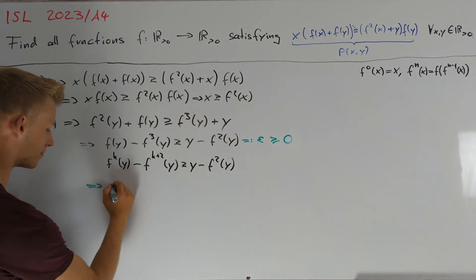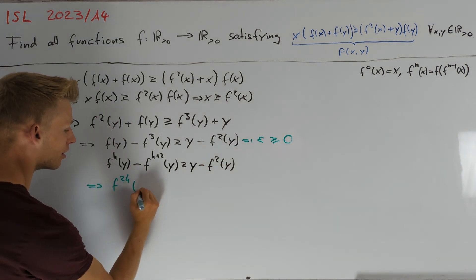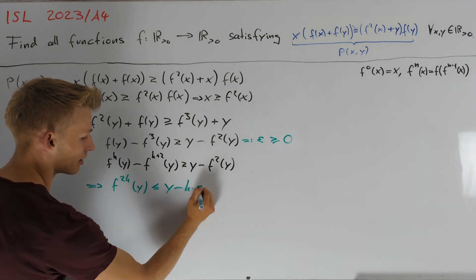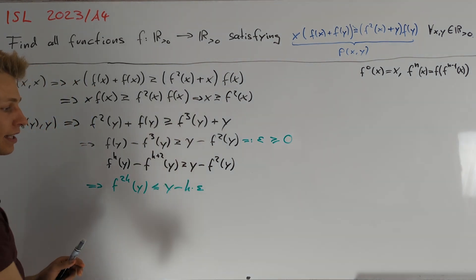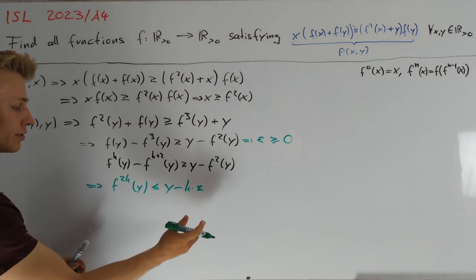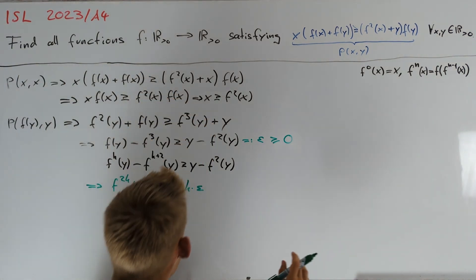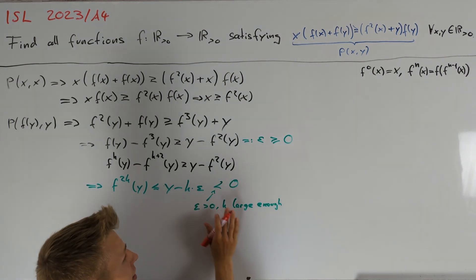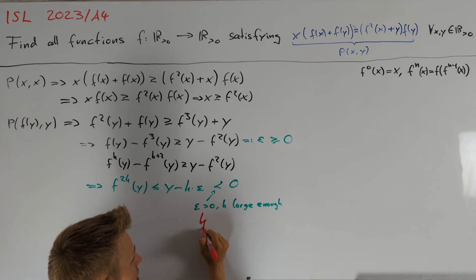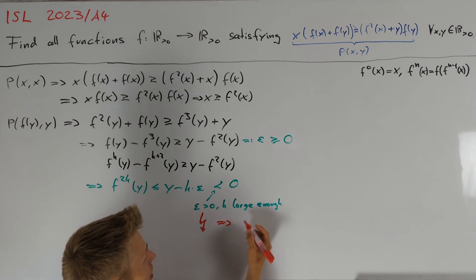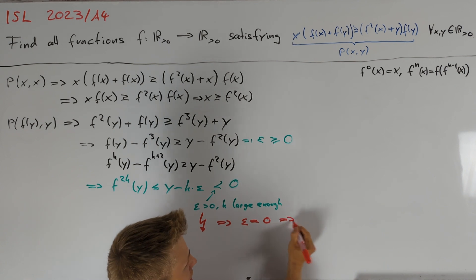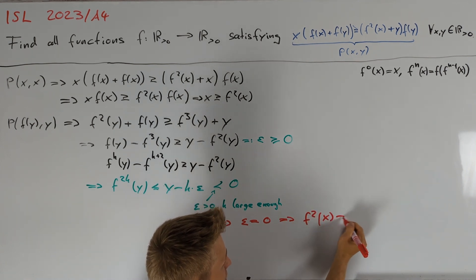So, we get that f^(2k)(y) is less than or equal to y minus k times epsilon. We see that if epsilon is not equal to 0, then we can take k large enough such that this is less than 0. This is clearly not possible and therefore epsilon greater than 0 is a contradiction.